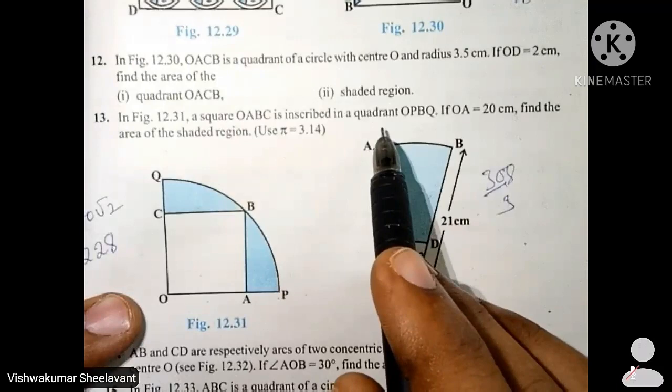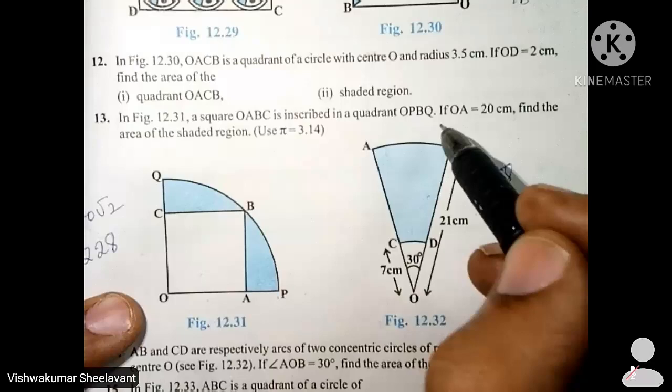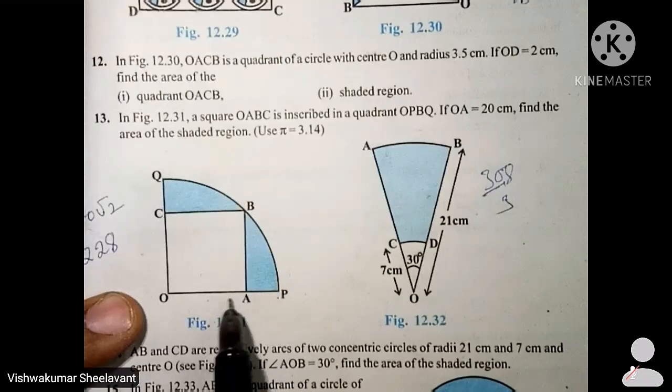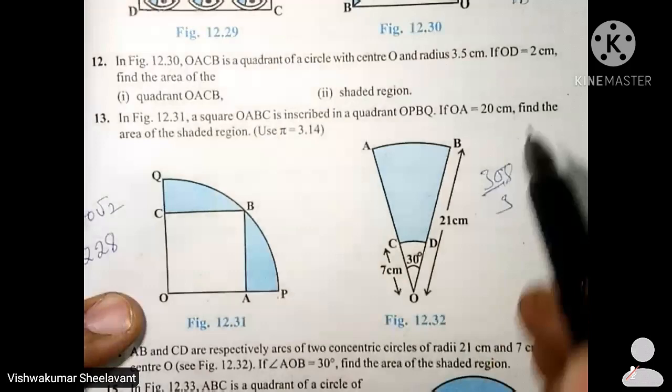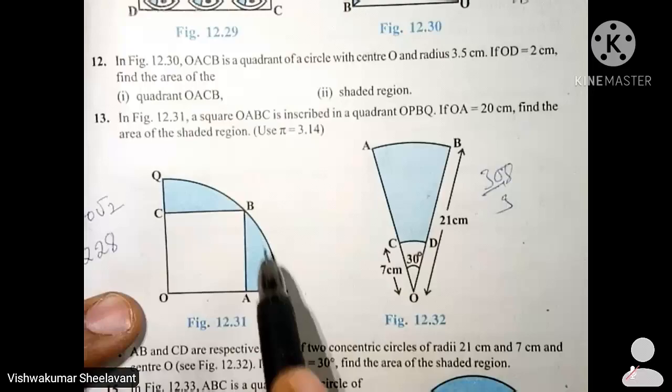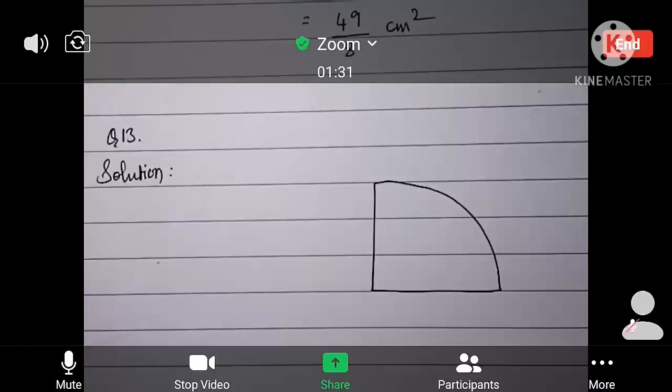Quadrant name is OPBQ. If OA is 20 cm, that means side length of square is 20 cm, find the area of the shaded region. Use pi equal to 3.14.